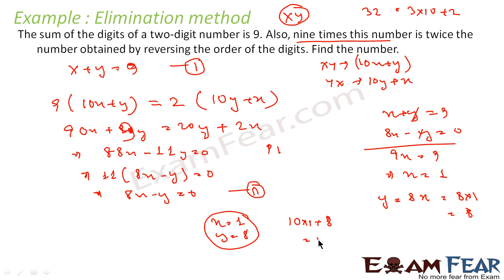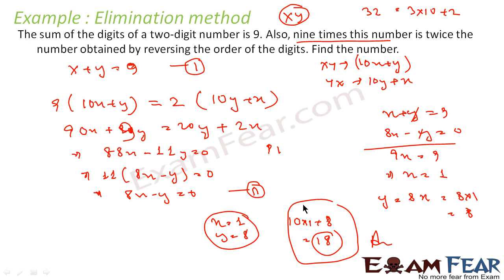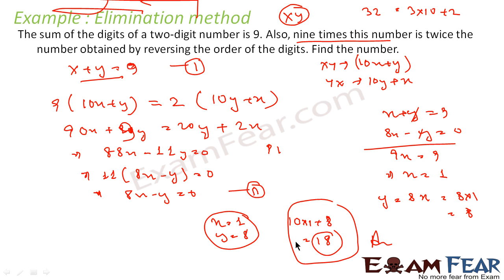So the number is 10x plus y, that is 10 times 1 plus 8, which equals 18. The number is 18 — that is our answer. Note: they are not asking for the value of x and y, they are asking us to find the number. We found x and y using the elimination method and then computed 10x plus y equals 18.